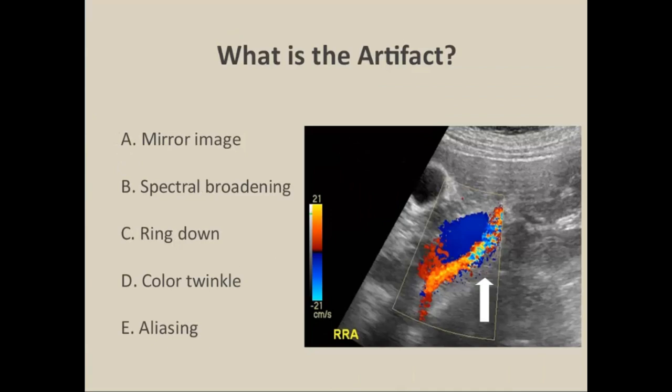Our first question: can you name this artifact? The arrow is pointing to the renal artery. Is this mirror image, spectral broadening, ring-down artifact, color twinkle, or aliasing? If you understand artifacts, most of these don't fit. Color twinkle is typically seen with calcification — usually in the setting of a renal mass or calcification, not a long segment of abnormality. What we see here is aliasing occurring within the artery at the center of the stenosis.